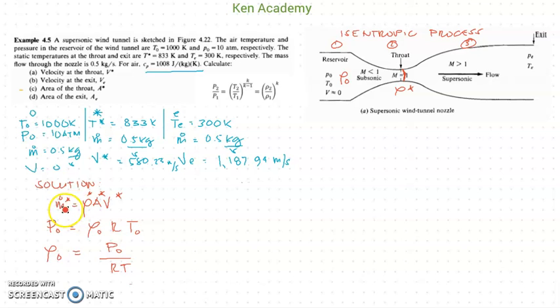To get the area at the throat, I can use the mass flow rate equation. But the problem is I do not have the density of the air flowing at the throat, the static air density. Since I have my velocity at the throat and the mass flow rate, I can proceed if only I have this density.